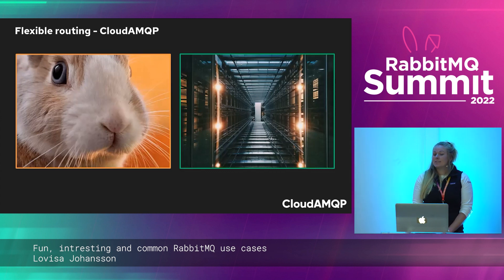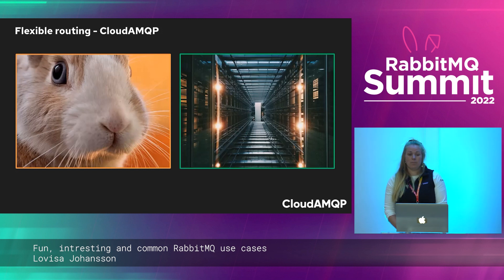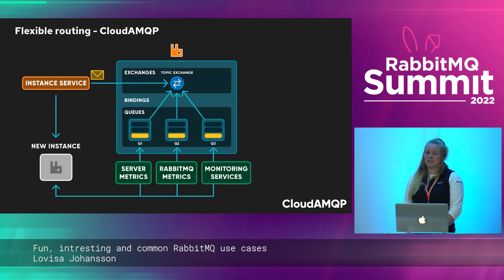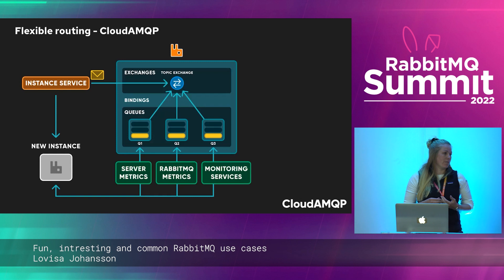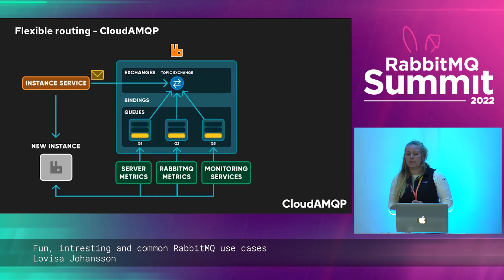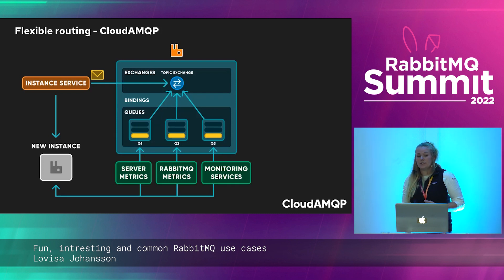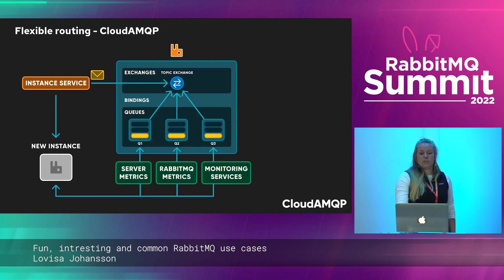RabbitMQ simplifies otherwise complicated routing cases. In our own architecture, once we have automatically created and configured a new RabbitMQ server for a client, we want to let other services know about this. One example is servers that need to connect and gather server metrics such as CPU and disk space. Another service that subscribes to this message gathers RabbitMQ-specific data such as queue length. Here we get help from the topic exchange — we send a message including information about the new server to the topic exchange, and many services can subscribe to it. A new consumer can subscribe to the new server-created message without anything needing to be adjusted on the publisher's side.